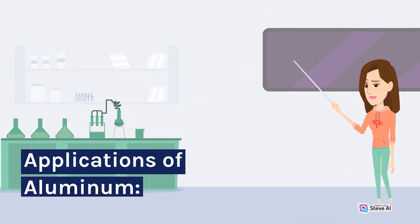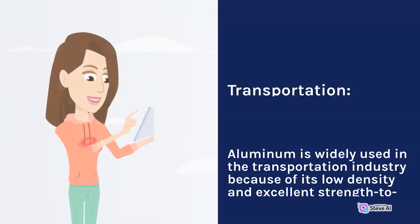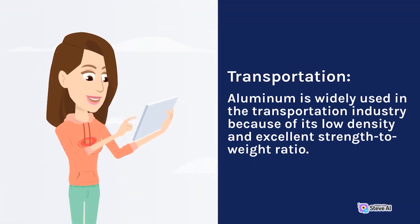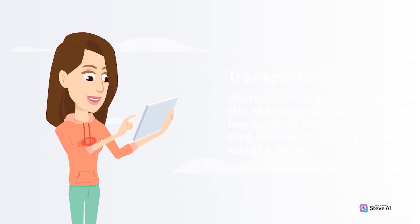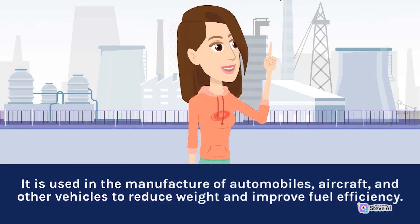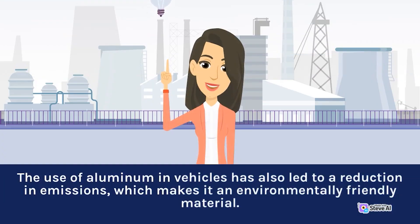Applications of Aluminum. Transportation: Aluminum is widely used in the transportation industry because of its low density and excellent strength-to-weight ratio. It is used in the manufacture of automobiles, aircraft, and other vehicles to reduce weight and improve fuel efficiency. The use of aluminum in vehicles has also led to a reduction in emissions, which makes it an environmentally friendly material.